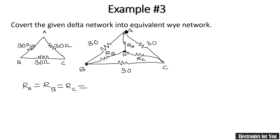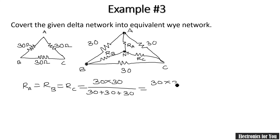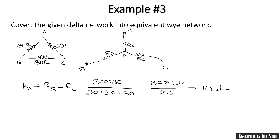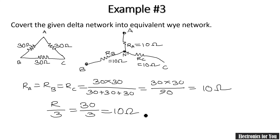Starting with point A — the two 30 ohm resistances are directly connected to A. So it is 30 multiplied by 30 divided by the addition of all resistances, which is 30 plus 30 plus 30 equals 90. So 30 into 30 in the numerator divided by 90 in the denominator gives us 10 ohm. Each resistance will be of 10 ohm. A balanced delta network can be converted into a balanced star network by the formula R divided by 3. We had 30 ohm resistance divided by 3, which equals 10 ohm in the equivalent star.